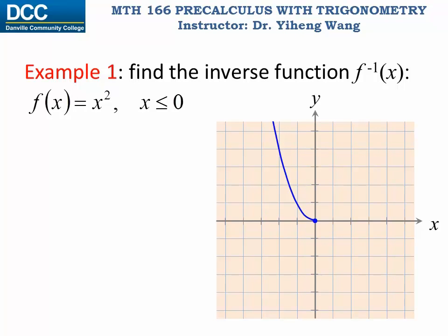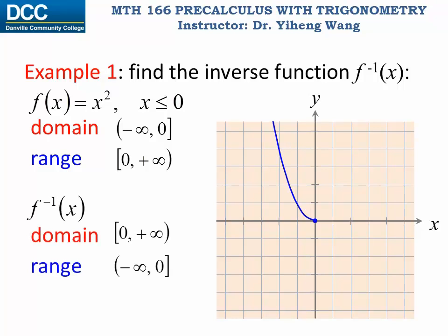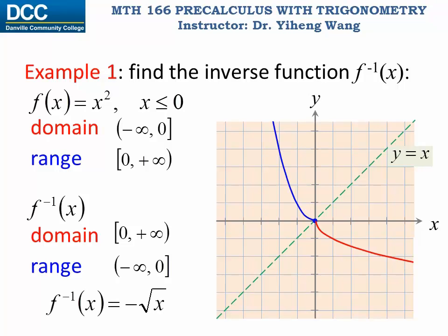We can use the graph for help. Because x ≤ 0, this function is only the left half of the squaring function. Its domain is from negative infinity to zero (including zero) and its range is from zero to positive infinity. Since inverse functions swap domain and range, the inverse function's domain must be from zero to positive infinity and its range from negative infinity to zero. Using the symmetry about the 45-degree line and this domain/range information, we can determine that the inverse function is negative square root of x.